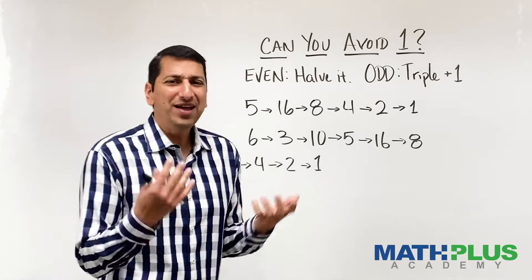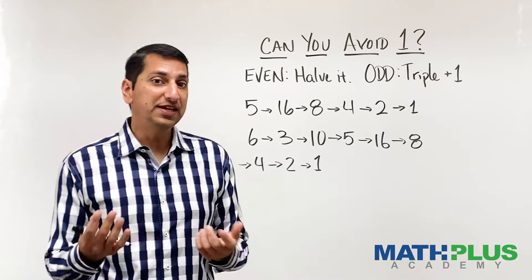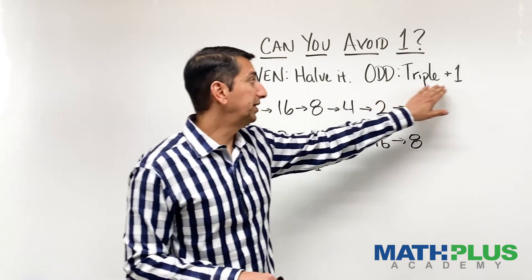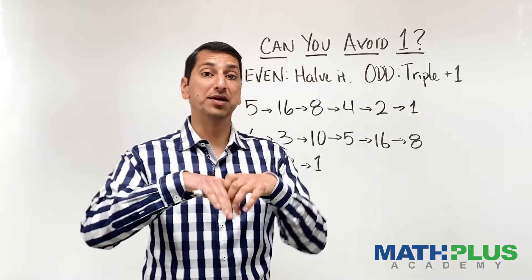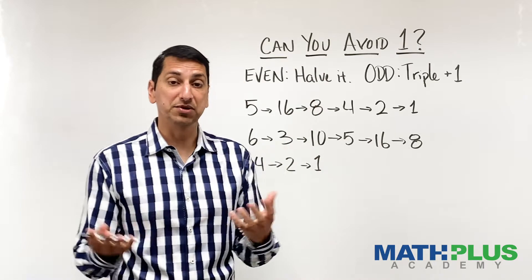Another thing to think about is why these rules? Why these two rules? And I think it's interesting to note that if the number is odd, you're tripling it and adding one. So you're always making odd numbers bigger. And you're always making even numbers smaller.